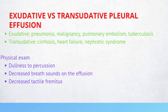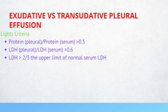To distinguish between a transudative versus exudative fluid, this requires measuring the pleural fluid levels as well as the serum fluid levels of substances like LDH and protein. Light criteria is used to differentiate between them. If a patient's protein pleural over protein serum is greater than 0.5, their LDH pleural over LDH serum is greater than 0.6, and their LDH is greater than two-thirds of the upper limit of normal of serum LDH, then you want to think about an exudative effusion.